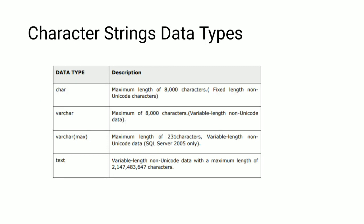Character string data types include CHAR, VARCHAR, VARCHAR(MAX), and TEXT. CHAR has a maximum length of 8000 characters and is of fixed length. VARCHAR has a maximum of 8000 characters and is of variable length. VARCHAR(MAX) has a maximum length of 2^31 characters and is variable length. TEXT is a variable-length non-Unicode data type with a maximum length of 2,147,483,647 characters.